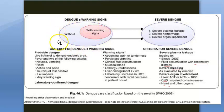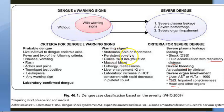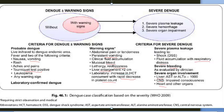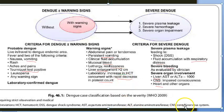Dengue without warning signs: nausea, vomiting, rashes, positive tourniquet test, and pain. With warning signs: persistent vomiting, restlessness, liver enlargement, mucosal bleeding, increased hematocrit, and rapid decrease in platelet count. Severe dengue criteria include respiratory distress, liver involvement, CNS involvement, cardiac involvement, severe bleeding, and shock.